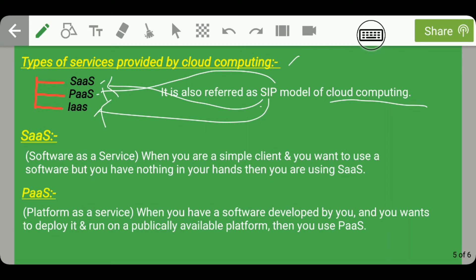The first service is SaaS, which stands for Software as a Service. When you are a simple client and want to use software that is not physically available on your system, you use SaaS. For example, if you want to play a game not installed on your system, you play it online — the memory and CPU required are provided through the website hosting that game.